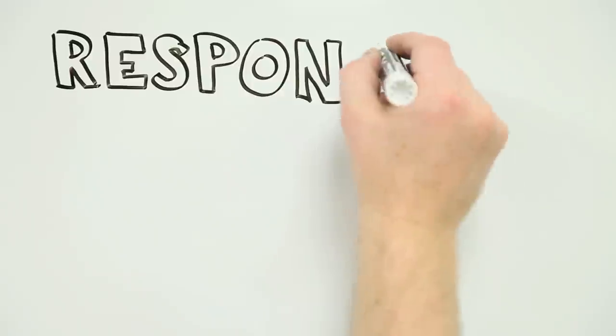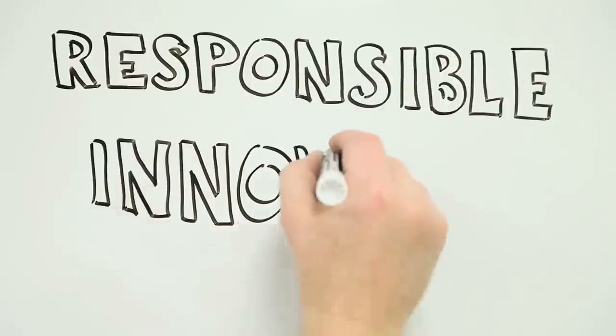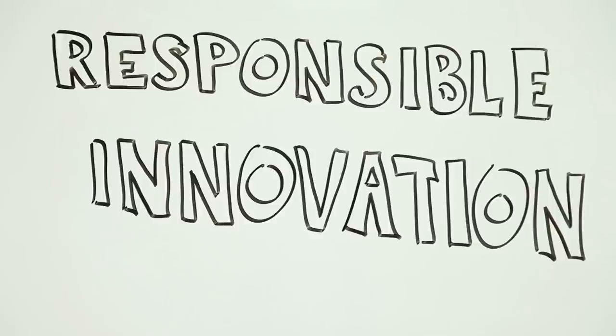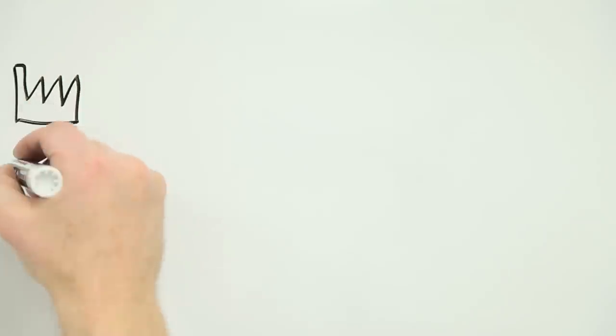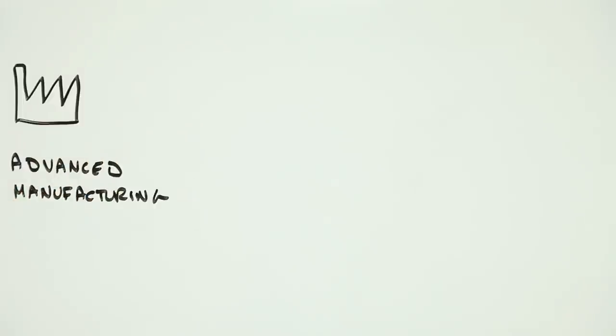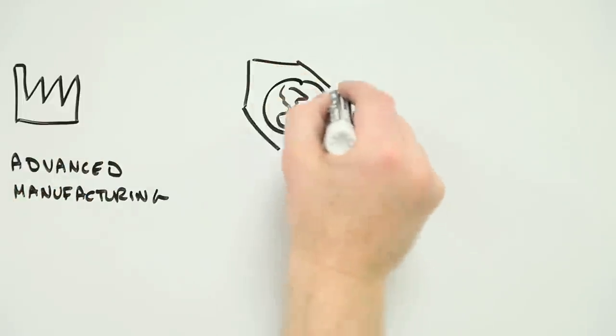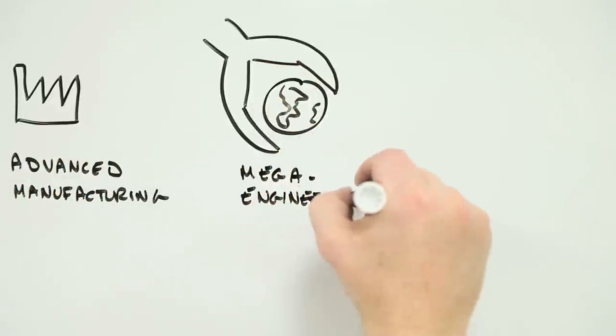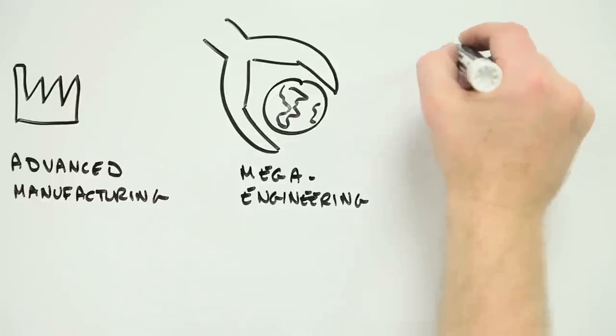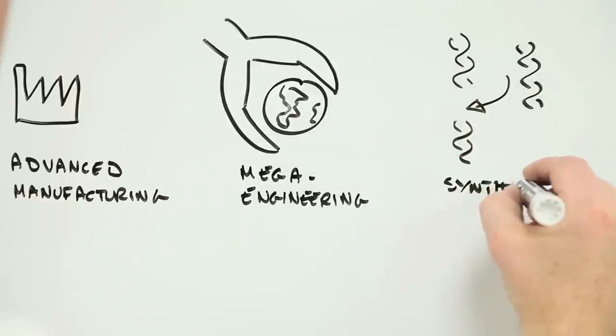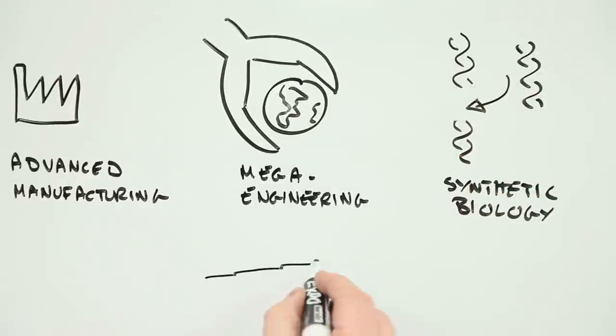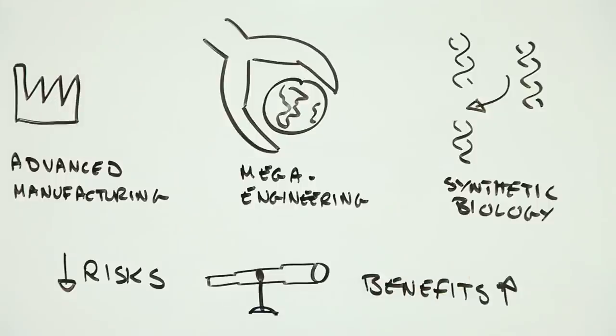Three, responsible innovation. Instead of inventing something and then spending the following decades trying to fix the unintended consequences, why not try to avoid future risks up front? As well as being good for people's health and the environment, it also makes perfect business sense, which is why the science of risk is being used increasingly in the development of everything from advanced biotechnology to 3D printing.